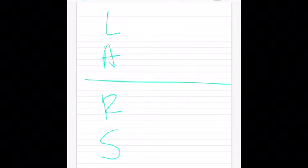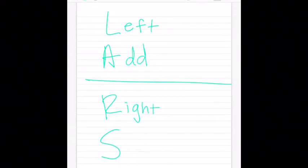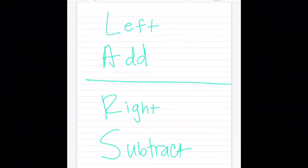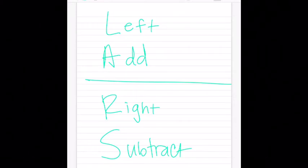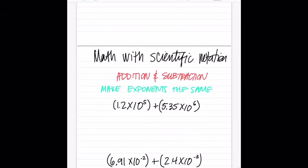The rule is called LARS. L stands for Left, A is for Add, R is for Right, and S is for Subtract. Yesterday I talked about moving decimals using big number or small number — I don't say left or right for that, because LARS uses left and right and it would get confused. LARS is only used when you're doing math functions.